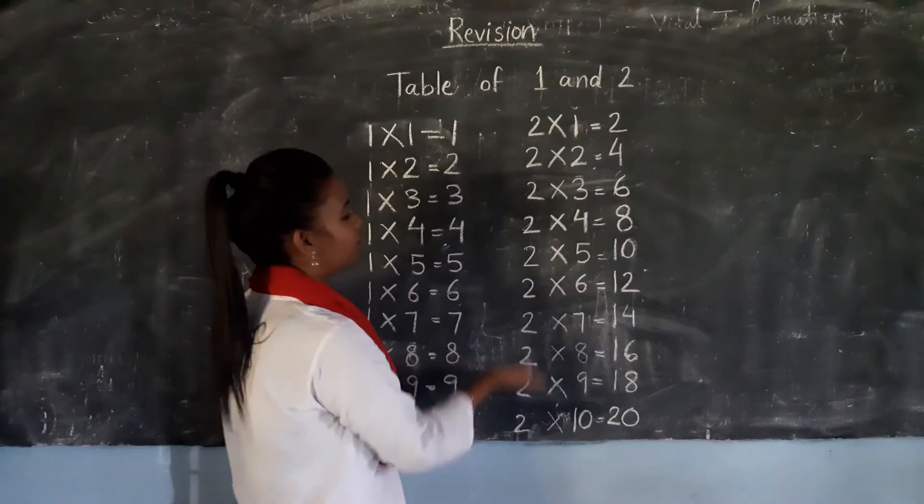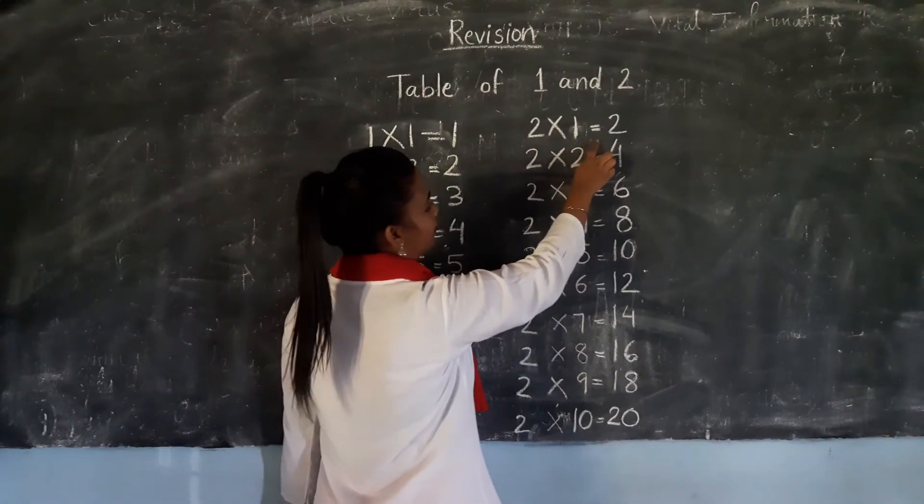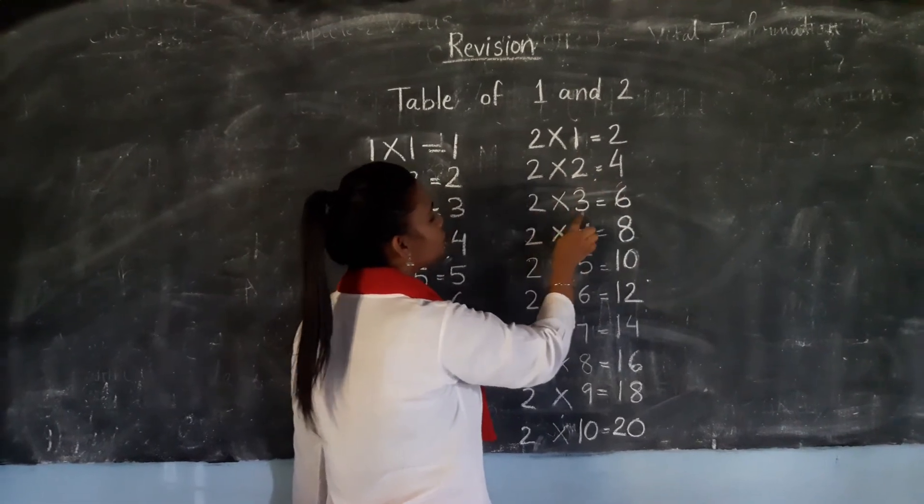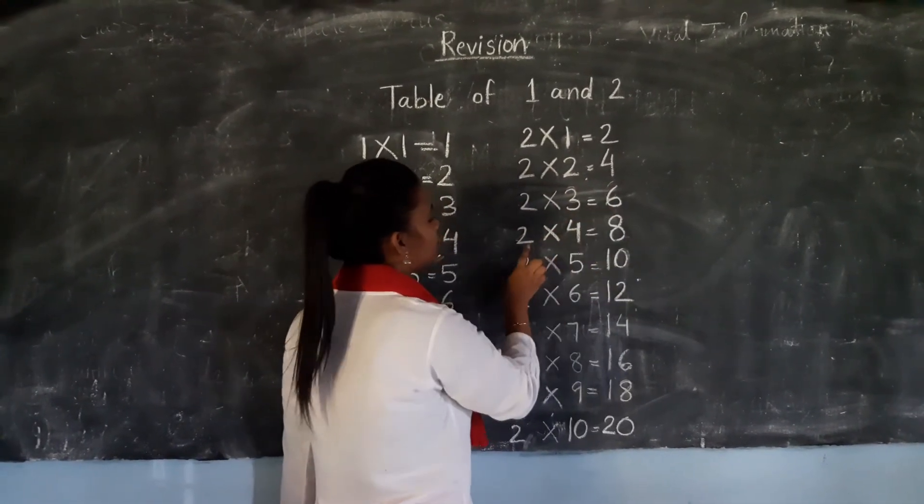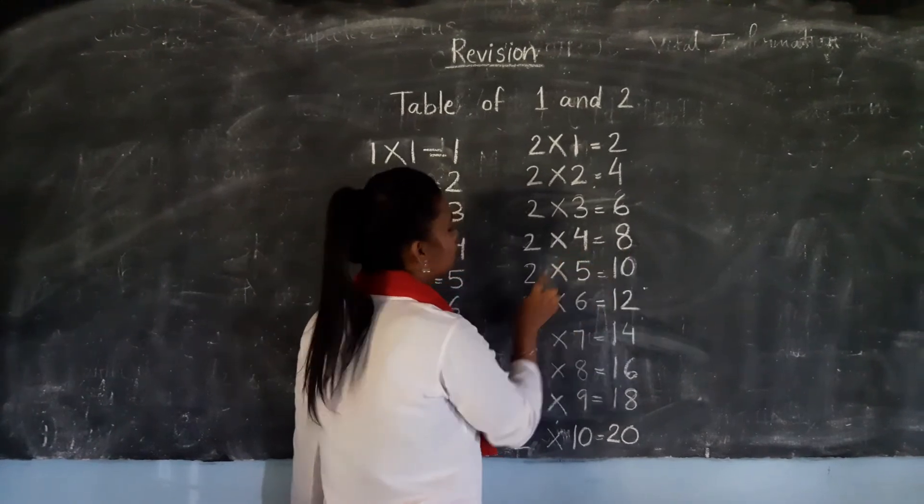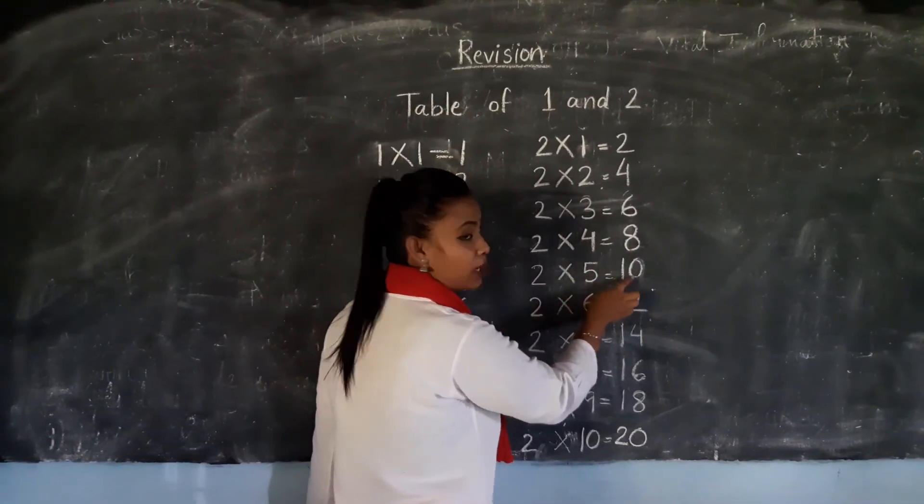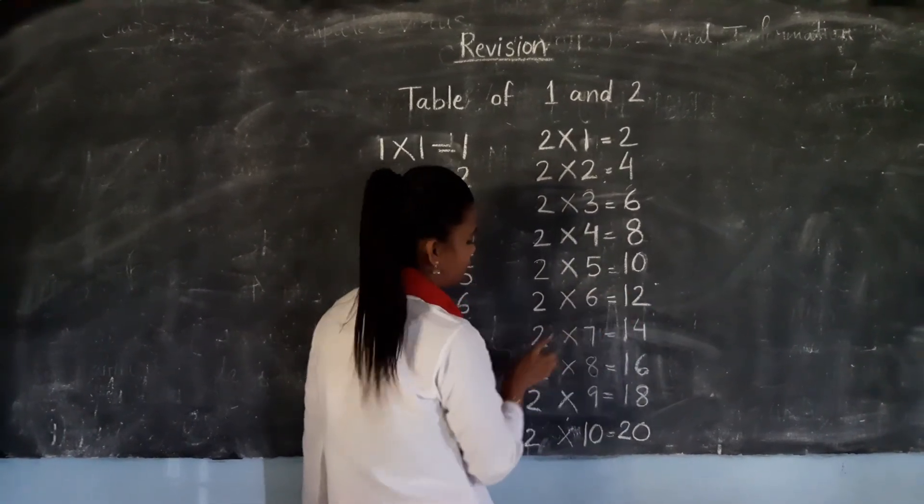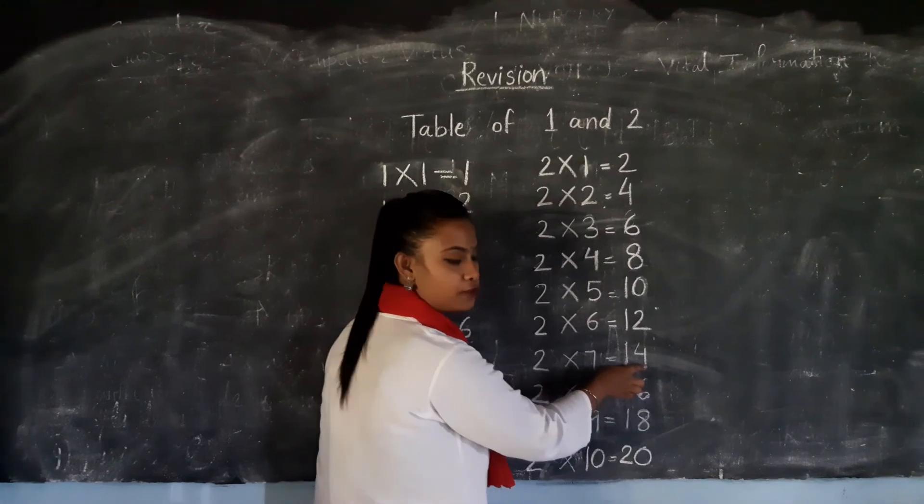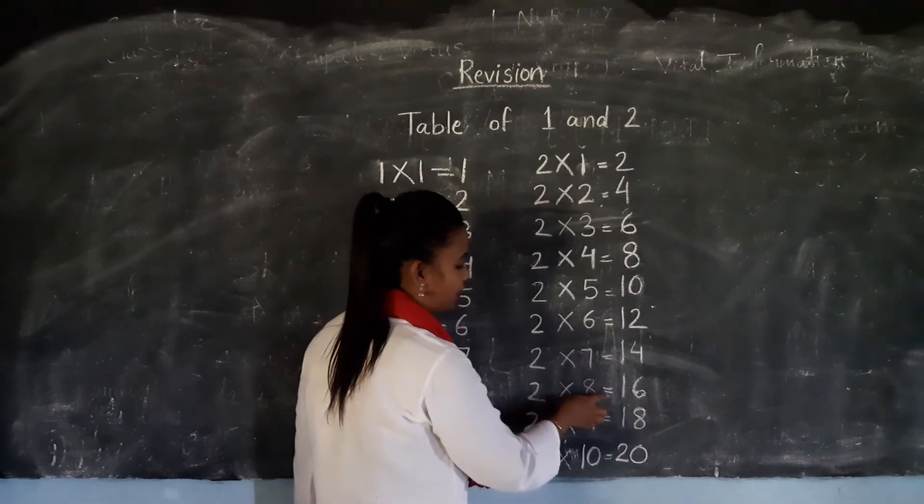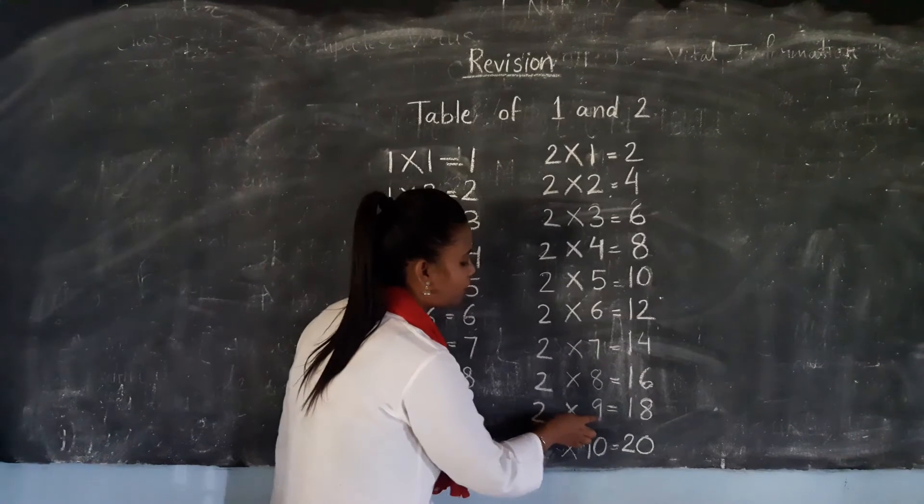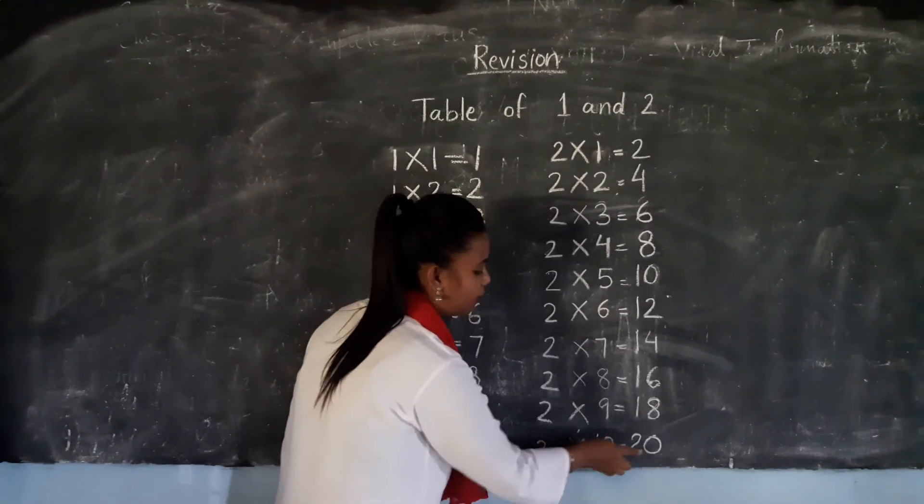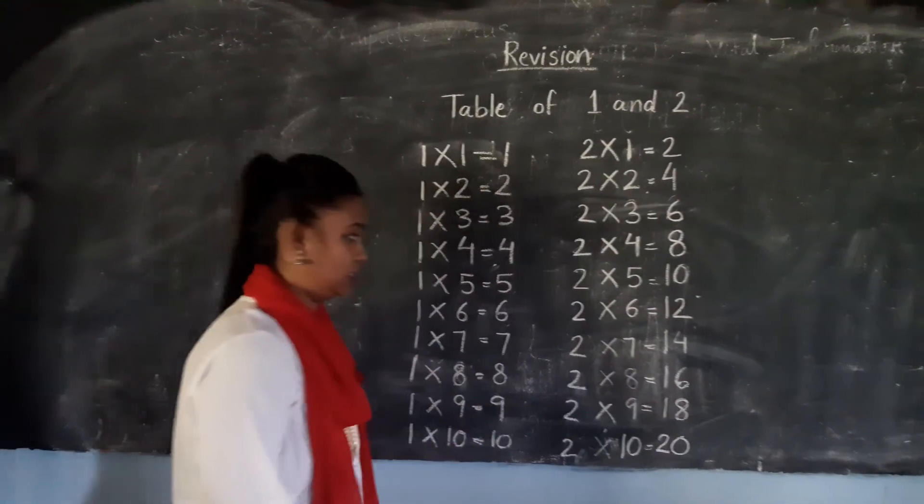Let's repeat again, okay? All of you pay attention once more. 2×1=2, 2×2=4, 2×3=6, 2×4=8, 2×5=10, 2×6=12, 2×7=14, 2×8=16, 2×9=18, and 2×10=20. Okay, children?